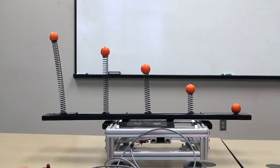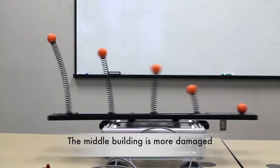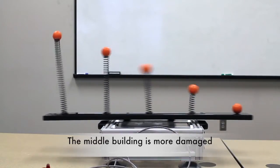By decreasing the period more to 0.3 seconds, the mid-height building is showing larger displacement, whereas the other buildings are showing less displacement.